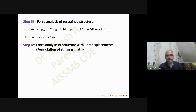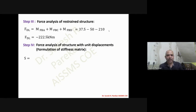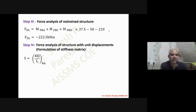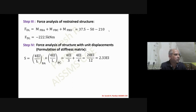For the stiffness formulation, since there is only one unknown, S is a 1×1 matrix. S = 4EI/L_BA + 4EI/L_BC = 4EI/3 + 4EI/4 = 2.33EI. For two unknowns it is 2×2, and for three it is 3×3.